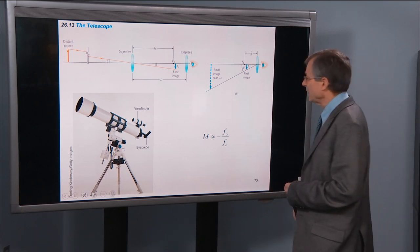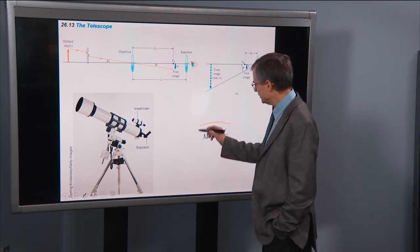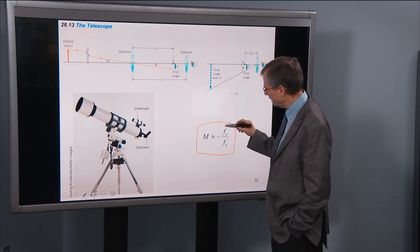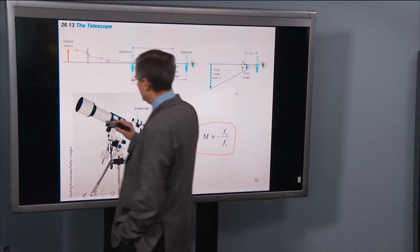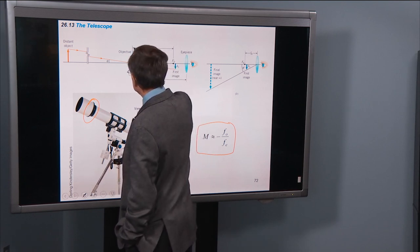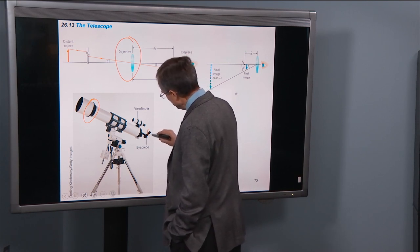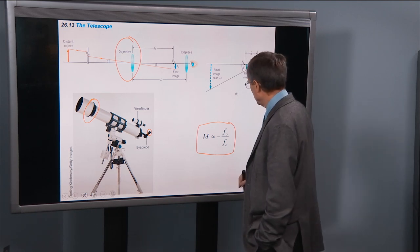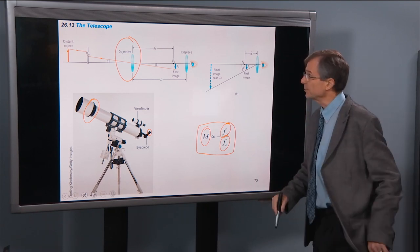And so for a telescope, the magnification turns out to be the negative of the ratio between the focal length of the objective lens. That's the big lens or mirror. So if you're looking inside of your telescope, you see a big lens right about here. That's called the objective lens. It's a big one. And then there's an eyepiece lens, a little one right here. And you can change out the eyepieces and put it inside of your telescope. The ratio of those two focal lengths gives the magnification, angular magnification for a telescope.